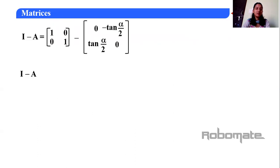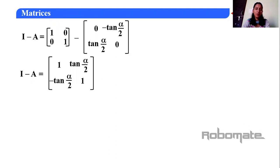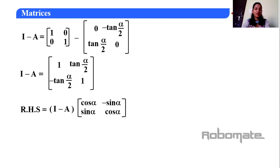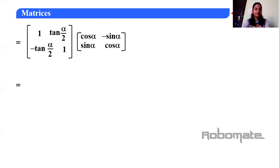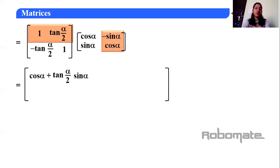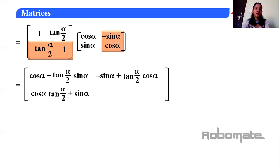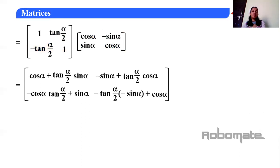Now RHS equals (I−A) × [cos α, −sin α; sin α, cos α]. We put in the value of I−A from above. The matrices are both 2×2 order. So we multiply: first row into first column, first row into second column, second row into first column, and second row into second column.